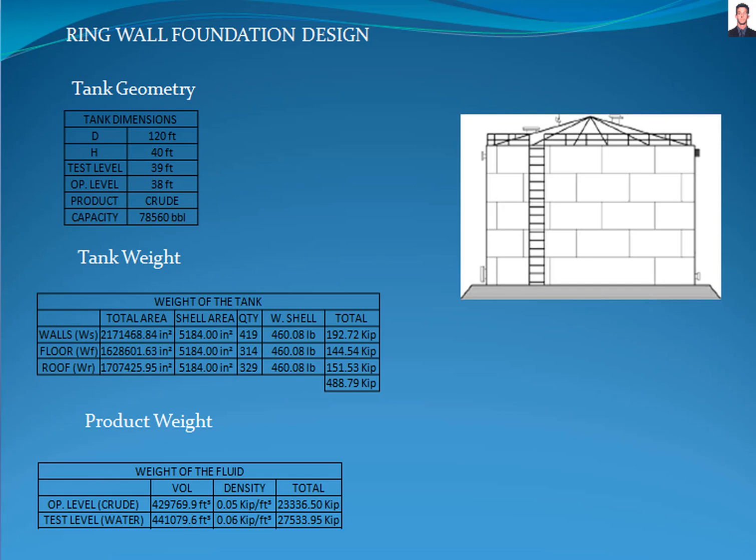The weight of the tank is calculated in three steps: the shell wall, the roof and the floor plate of the tank based on dimensions. The results are in this table. The total weight of the tank is 488.79 kilopounds.